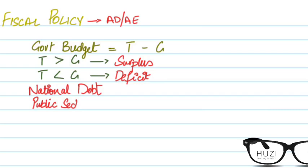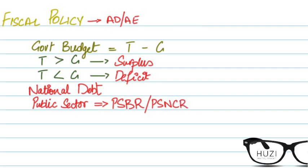From O-levels and AS, we talk about the public sector. There's a private sector owned by private firms and entrepreneurs, and there's the public sector, which is made up of central government, local government, and public corporations. The public sector leads to PSBR — public sector borrowing requirement — also called PSNCR, public sector net cash requirement. This is basically the annual deficit of the public sector and the total amount that the public sector must borrow to recover the budget deficit.